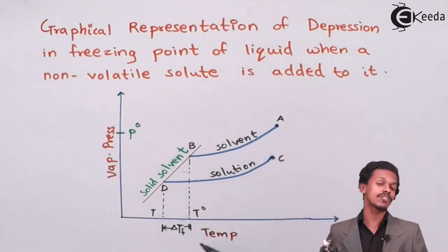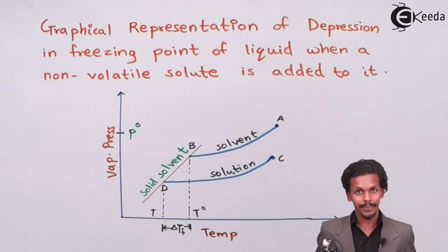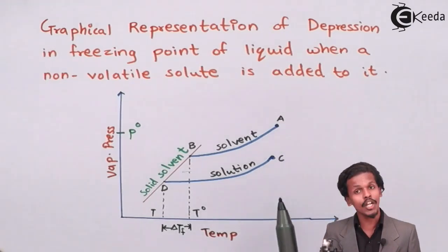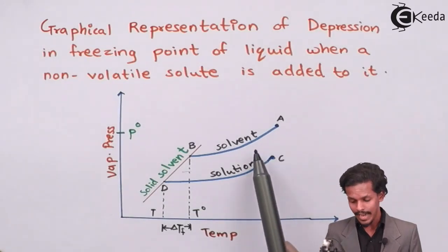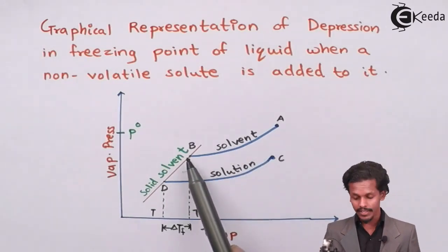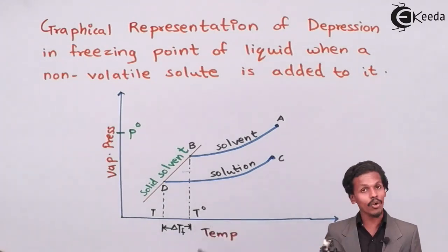So in this case, the temperature is now decreased at point B, and at point B the temperature that we get is T naught.